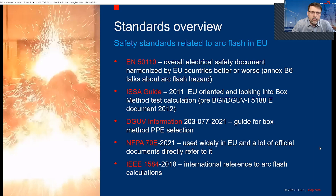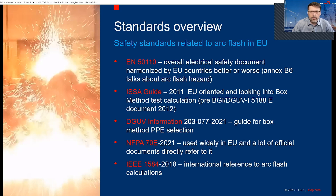The ISA guide covers thermal arc flash hazard and is kind of the best document so far in the EU, but it was a brief document pre-DGUV release. So generally the DGUV later version is almost the same as what was presented in that guide. Then we have DGUV Information 203-077 — the latest release is from 2021. This standard talks about arc flash PPE selection based on the box method test.